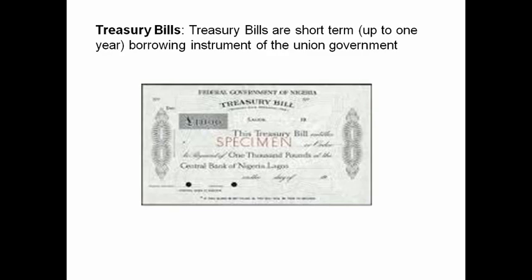Treasury bills are short-term borrowing instruments of the union government, with maturity up to one year. The maturity period for treasury bills is commonly 28 days (about one month), 91 days (3 months), 180 days (6 months), or 364 days (about one year). Treasury bills can mature before one year.